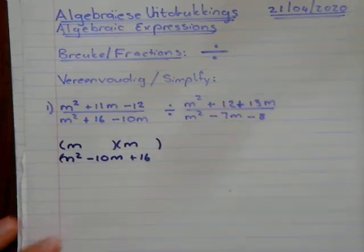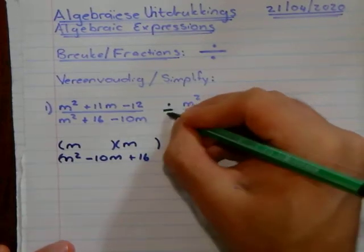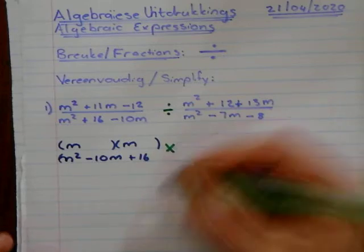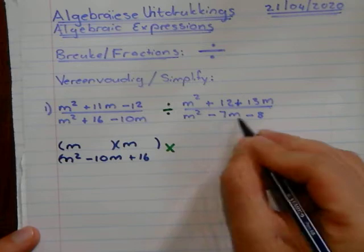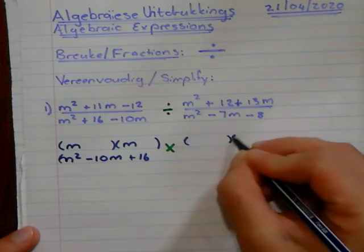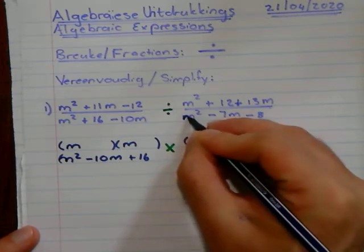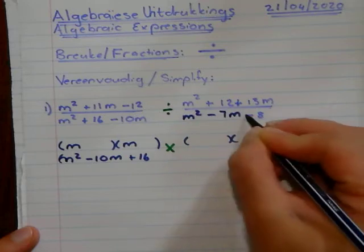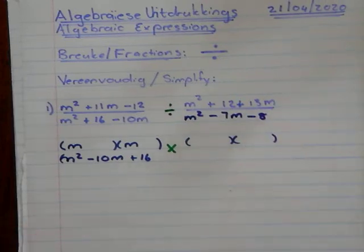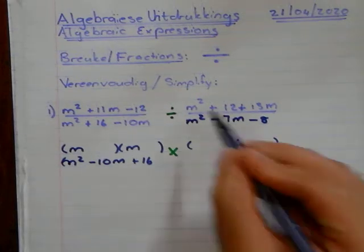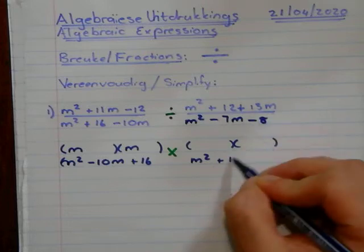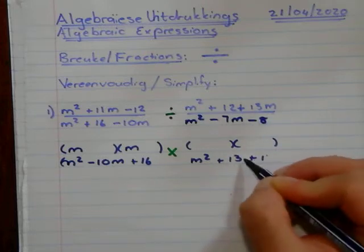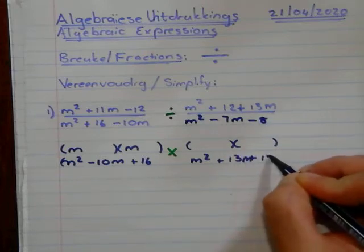So I'm going to change my division to multiplication, and that flips around. Again I can factorize the bottom one. Can I factorize the bottom line? We can do the bottom line: M² plus 13M plus 12.